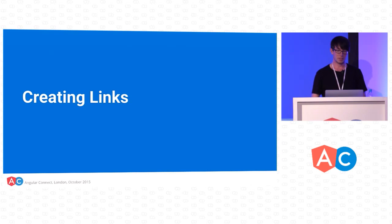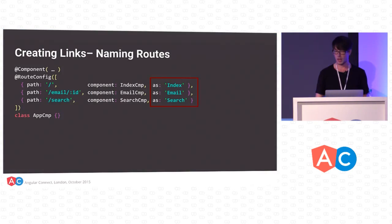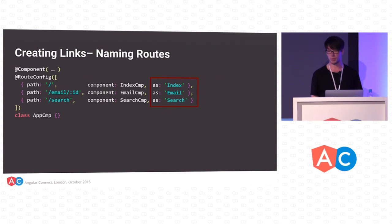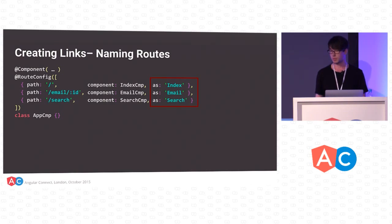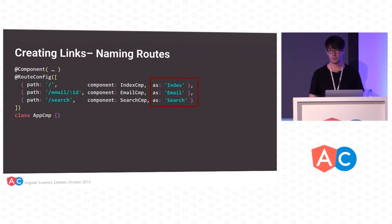It's kind of silly to have a client-side app and have to refresh the browser to show individual routes, so we have a mechanism for creating links. The first thing we need to do is name these routes. We use the property 'as' and give them a name. These names are title case, just by convention, and they correspond to the component. So we have Index, Email, and Search corresponding to each of the different views.